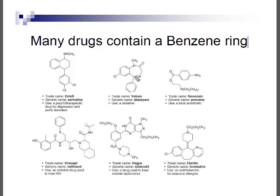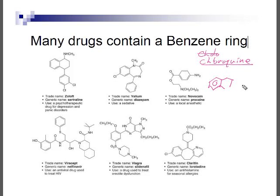A number of drugs contain the benzene ring. One that has been in the news is chloroquine, an anti-malarial drug also used for autoimmune diseases like lupus and rheumatoid arthritis. It contains a couple of fused benzene rings and a heterocyclic ring with nitrogen. Hydroxychloroquine has an additional alcohol group to increase solubility. Benzene rings appear in many medicines.